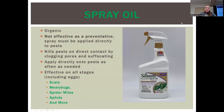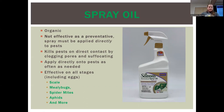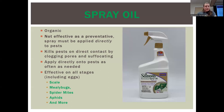Spray oil: particularly effective with scale and mealybugs that have that tough chemical-resistant shell. This is a suffocant, so it only works on contact — you have to make sure you spray every single part of the plant. If you don't spray the pest directly, it's not going to stick and take care of the pest later — it has to hit the pest when you're spraying. It clogs the pores of the mite or insect and prevents it from breathing through its skin.